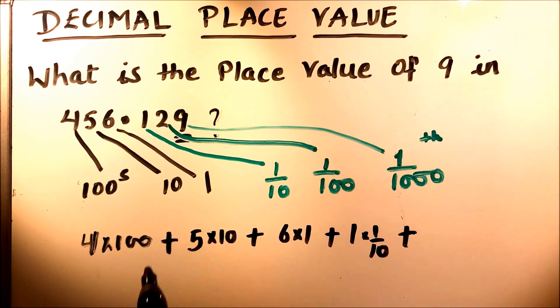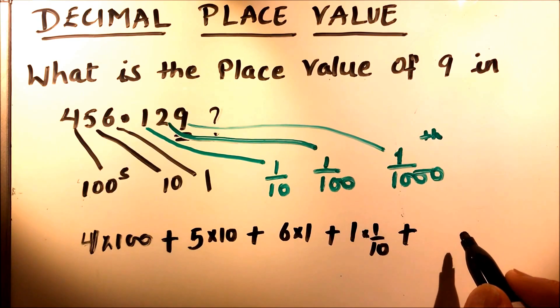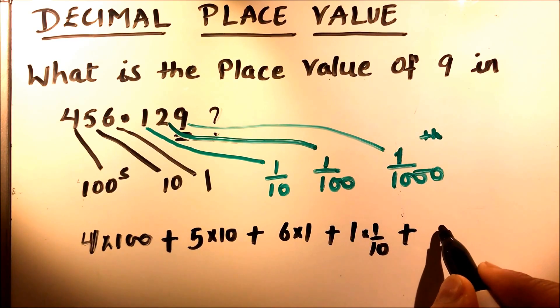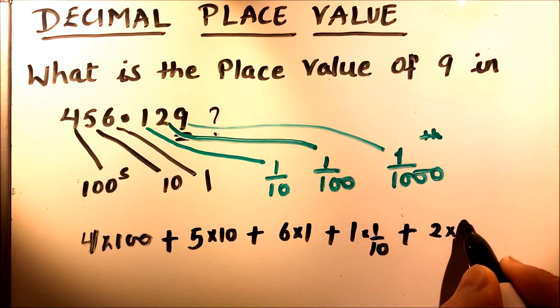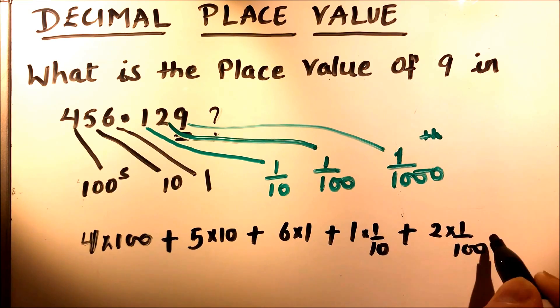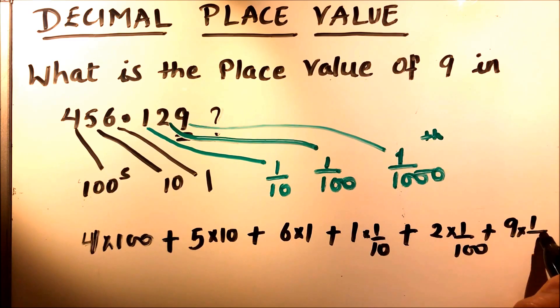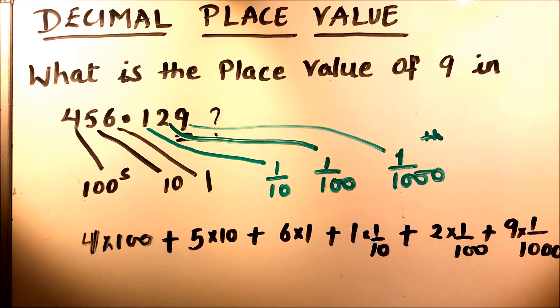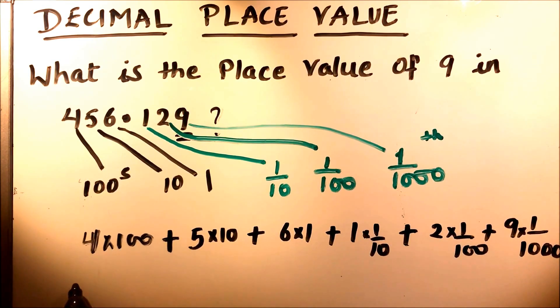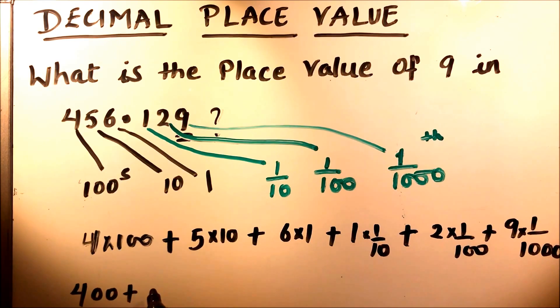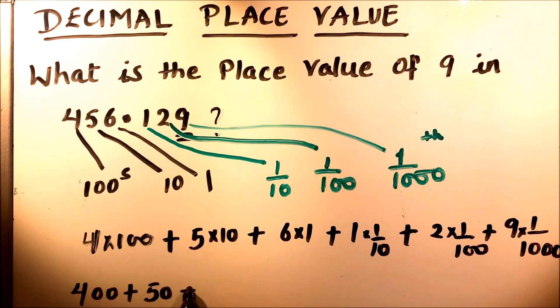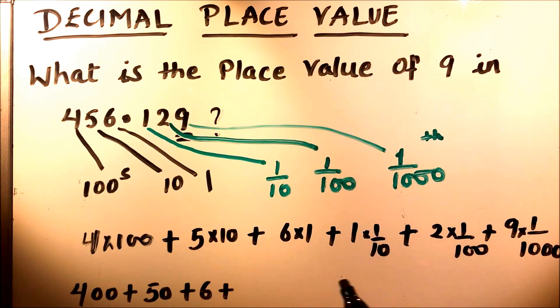Now we have 2, which is in the hundredths place, so we will write it as 2 times 1 hundredth, and then 9, we will write it as 9 times 1 thousandth. So this number will be 400 plus 50 plus 6 plus